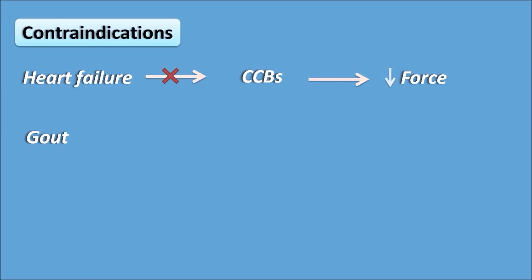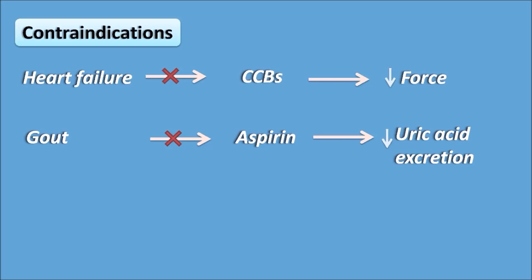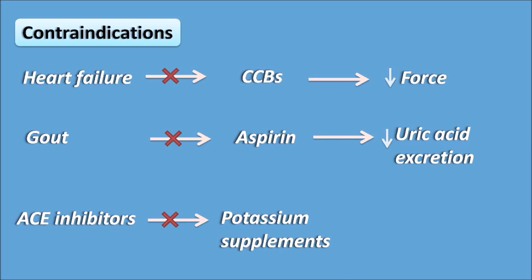In gout, where uric acid levels are increased, aspirin should not be used because it decreases uric acid excretion, further increasing the gouty attack. Similarly, ACE inhibitors should not be combined with potassium supplements, as ACE inhibitors produce hyperkalemia which is worsened by potassium supplements. Such contraindications are clinically important as well as important from an examination point of view.